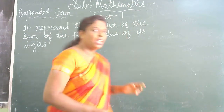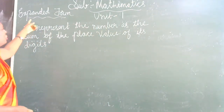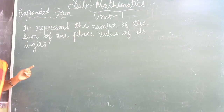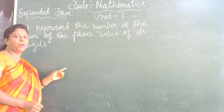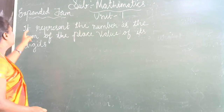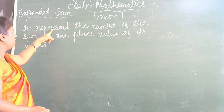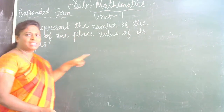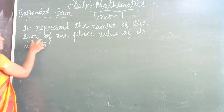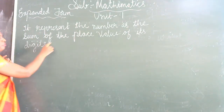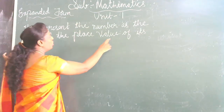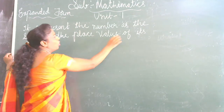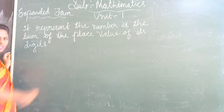So in today's class I am going to teach you Expanded Form. First, let's understand what is Expanded Form. Expanded Form represents the number as the sum — sum means the total — sum of the place value of its digits.